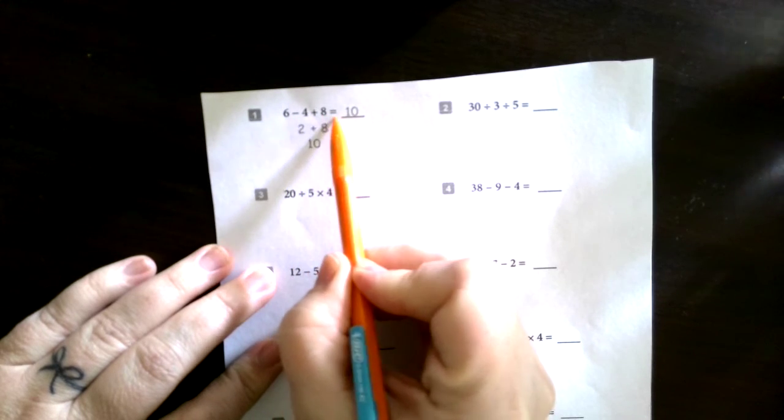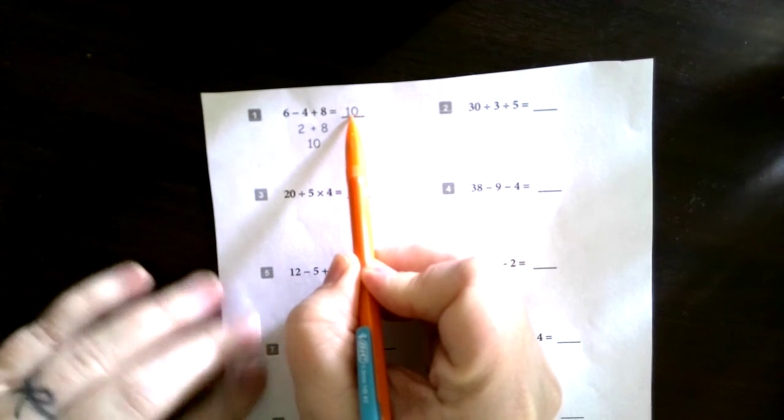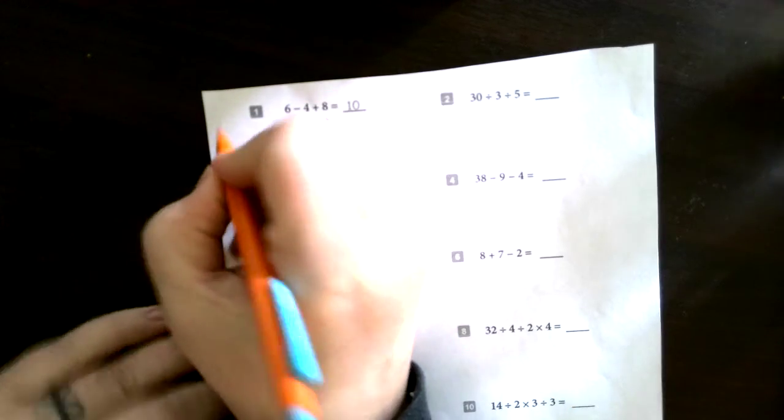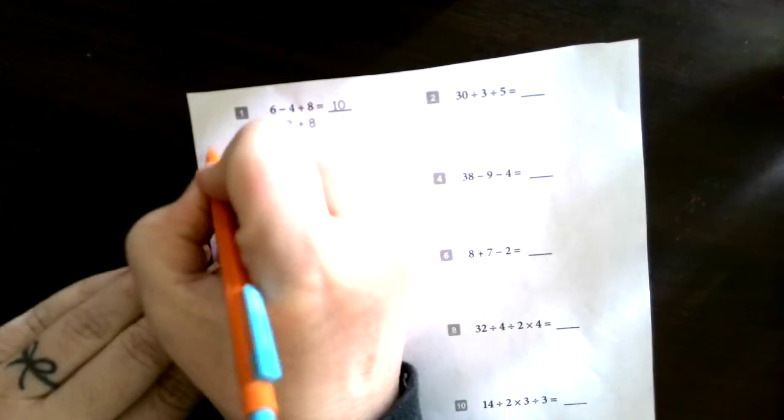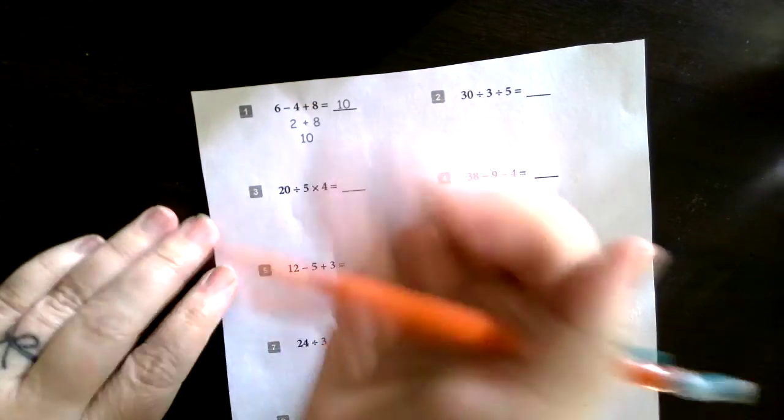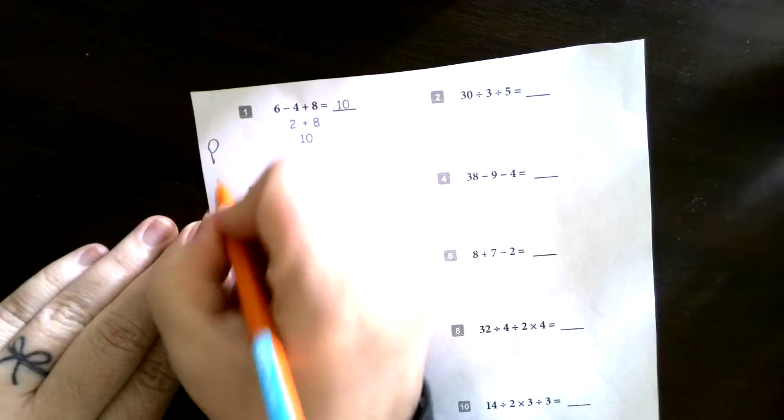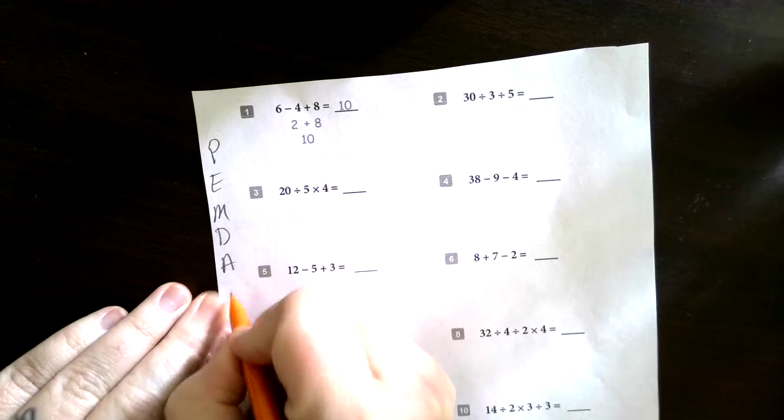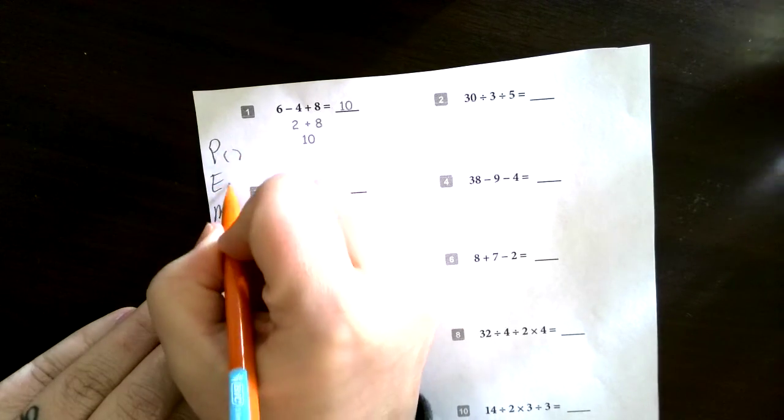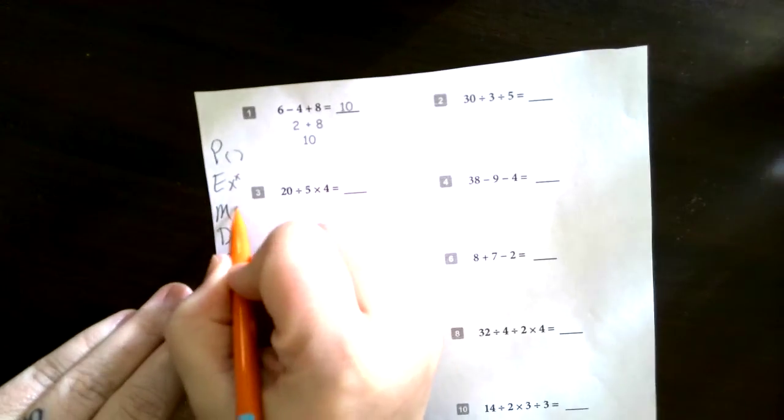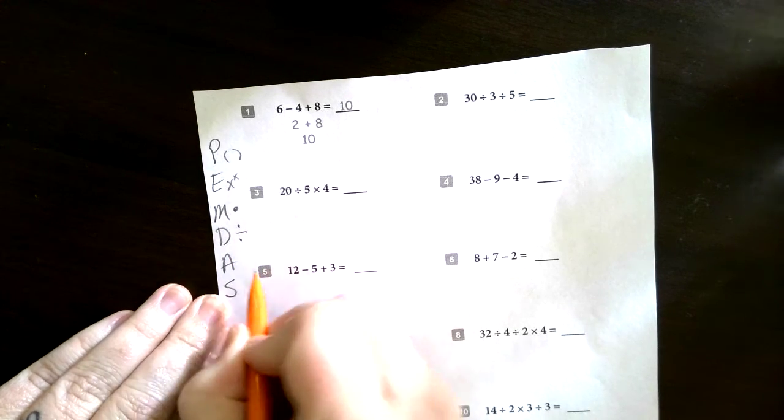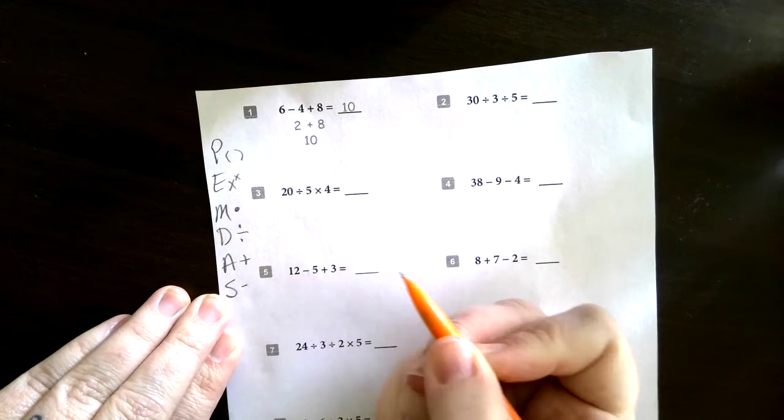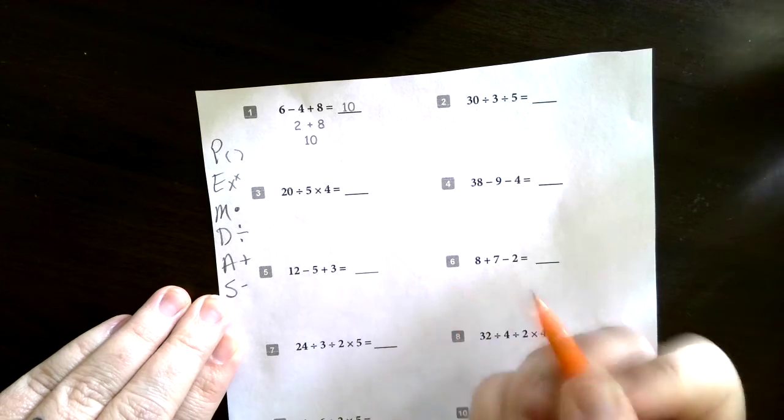So for math it's 6 minus 4 plus 8 equals 10. We know from doing the order of operations that we need to do our PEMDAS, so I'm gonna make a note over here off the side. Please Excuse My Dear Aunt Sally is how I was taught to remember parentheses, exponents, multiplication, division, addition, and subtraction.